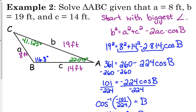So, when you're finding two angles, you start by finding the smallest angle.